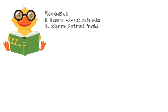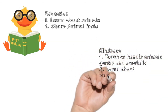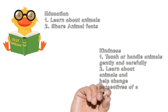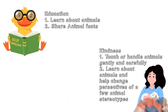The second category is kindness. There are so many ways to be kind to animals. One way is to try and be gentle when you touch them or handle them. When you are gentle with animals, you're being kind to them. Another way is to learn about animals and dispel stereotypes and fears.